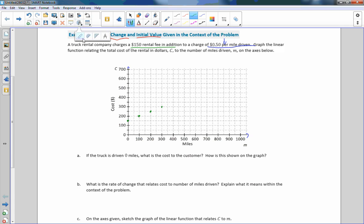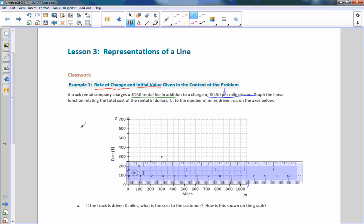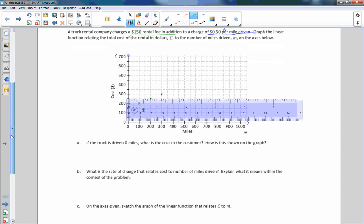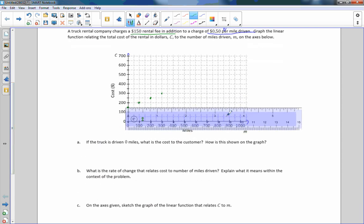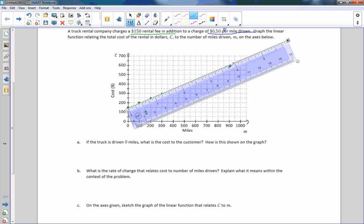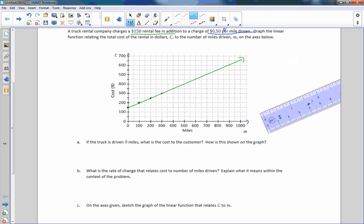When I graph this line, let me grab my ruler here. Put that right there at zero, rotate that up, and draw a line through those points. That is the equation of our truck rental. At 1,000 miles it would cost us $650.